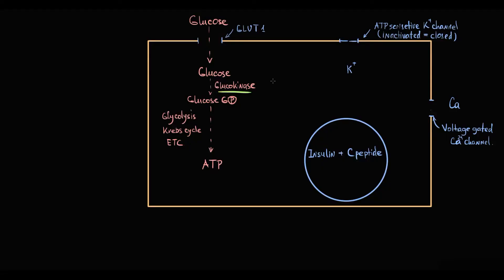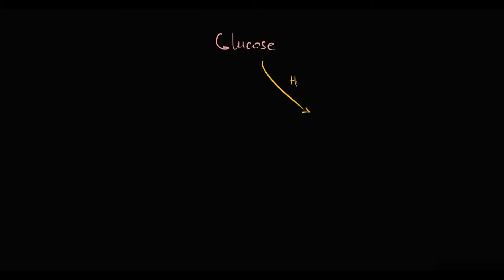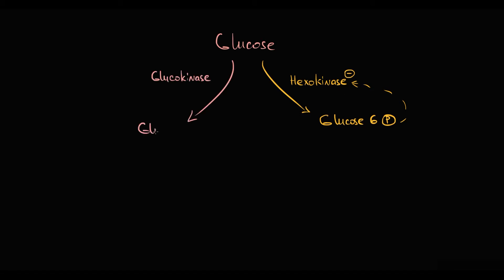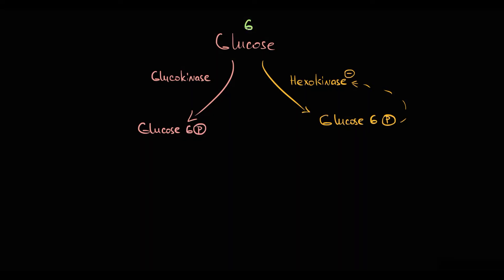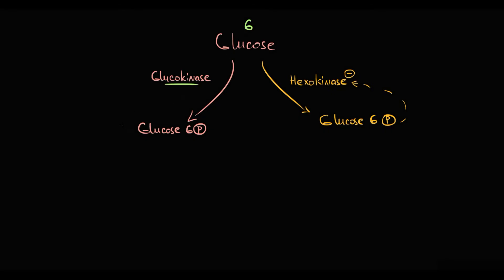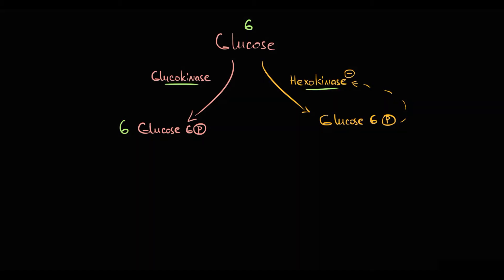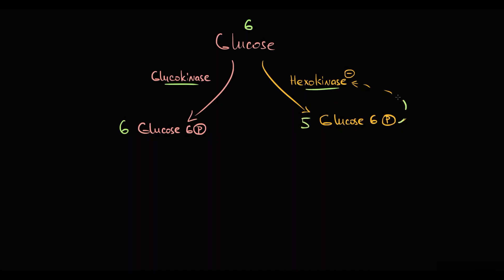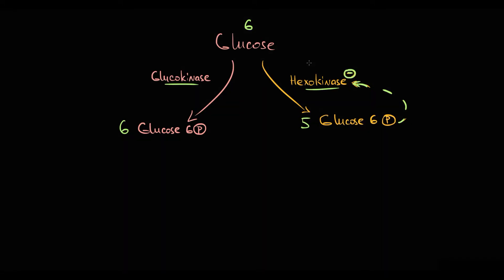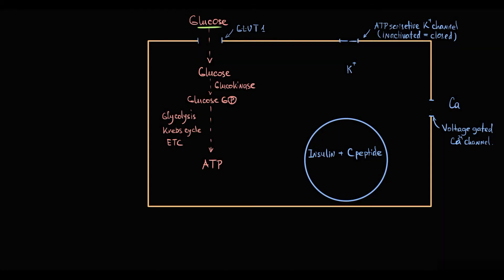Another enzyme that can phosphorylate glucose to glucose-6-phosphate is hexokinase, present in most tissues. However, hexokinase activity is inhibited by its product, glucose-6-phosphate. So only glucokinase can phosphorylate glucose in proportional amounts to glucose entering the cell. Basically, if 6 glucose molecules enter the beta cell, all 6 will be phosphorylated simultaneously. In contrast, hexokinase would phosphorylate 5, and those 5 glucose-6-phosphate molecules would inhibit hexokinase, leaving the last molecule unphosphorylated. This proportional phosphorylation by glucokinase permits proportional ATP production.